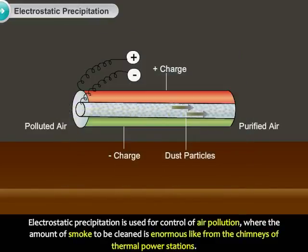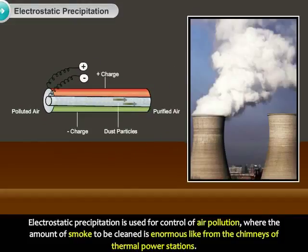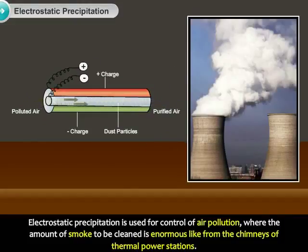Electrostatic precipitation is used for control of air pollution, where the amount of smoke to be cleaned is enormous, like from the chimneys of thermal power stations.